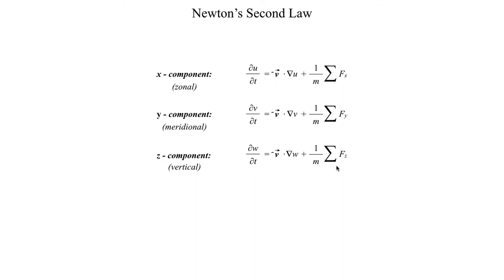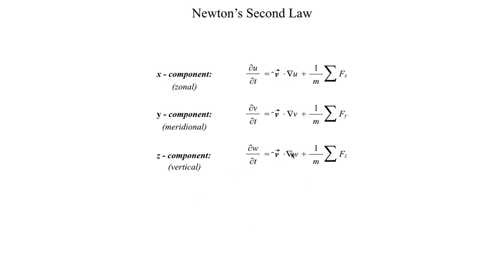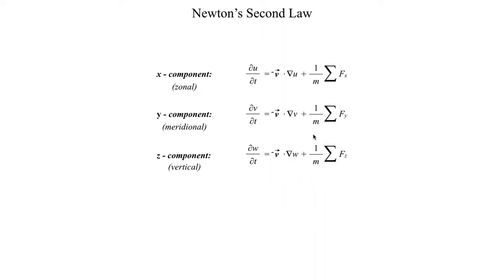Breaking this down into component form makes things a bit clearer. If you go through the exercise of expanding the advection term — which involves quite a lot of calculus and algebra — you can verify that it is indeed equal to this when broken into components. That's a long and tedious exercise, but you can do it if you want. Otherwise, you can take my word that these are the results you get from putting the equation into component form.